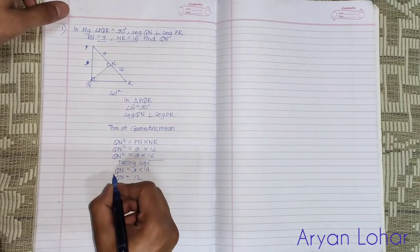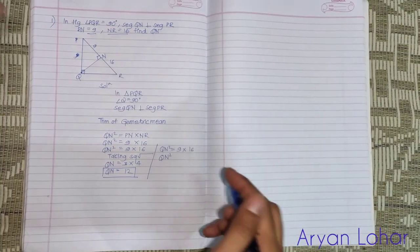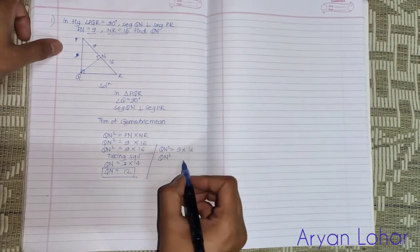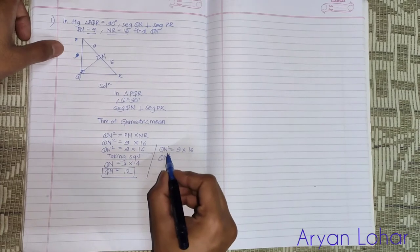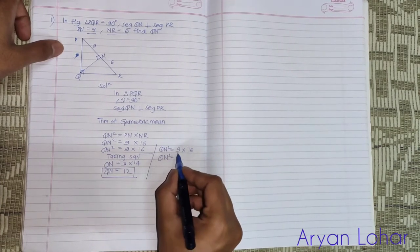We got the value of QN as 12. We can solve it by another way: QN square is equals to 9 times 16, that is QN square is equals to 144.